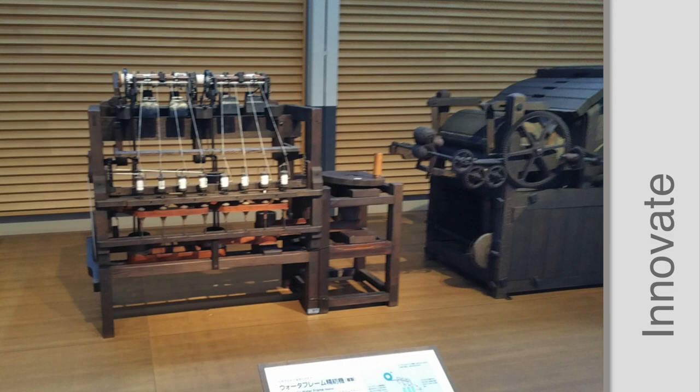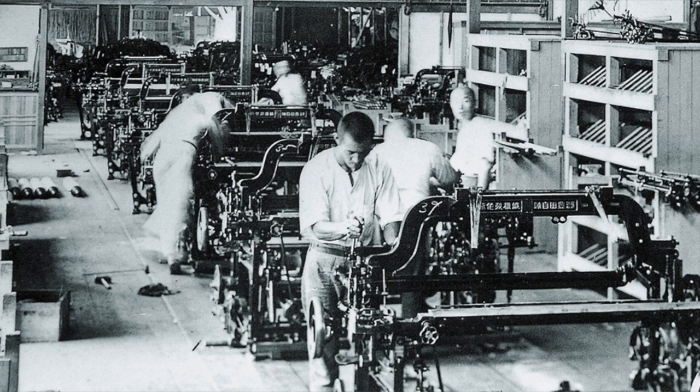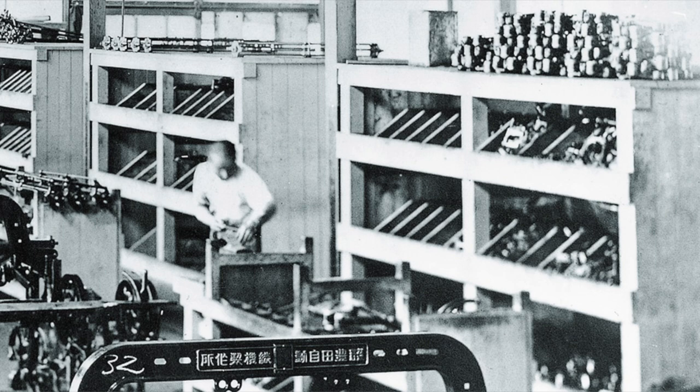As a result, workers did not have to be present all the time and could run more than one machine, and defects were greatly reduced. This innovative development was the beginning of the pillar you see in the Toyota house known as the Jidoka Pillar.